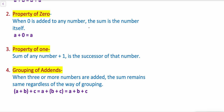Property 2: Property of zero. When 0 is added to any number, the sum is the number itself. For example, 22 plus 0 is equal to 22. Here 0 is added to 22, so 22 plus 0 is the number itself, which is 22.